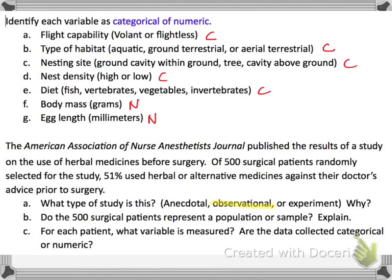Do the 500 surgical patients represent the population or the sample? This is only 500 randomly selected as part of the sample from the population, so it is a sample — they only took 500 out of the total. Then for each patient, what variable is measured? The variable is whether they used herbal or alternative medicines. This is categorical because it's saying they used it or they didn't — not by how much.